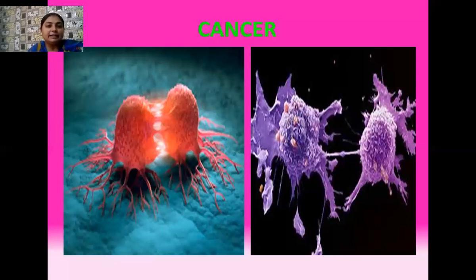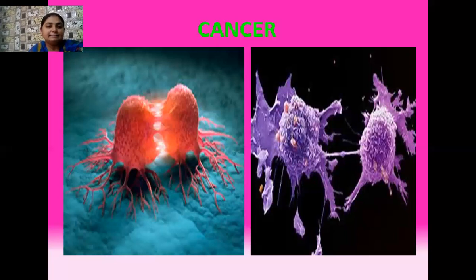In normal cells there is a property known as contact inhibition. That means whenever a cell undergoes growth, that growth is coordinated and controlled. When a growing cell comes in contact with another cell, the growth of that cell stops. Whenever there is a touch between the boundaries of two adjacent cells, the growth of those cells becomes restricted and controlled. But this property of contact inhibition is lost by cancerous cells. Whenever cancerous cells touch another cell, their growth does not stop — they keep on dividing again and again, and in this way masses of cells are formed, which form tumors.